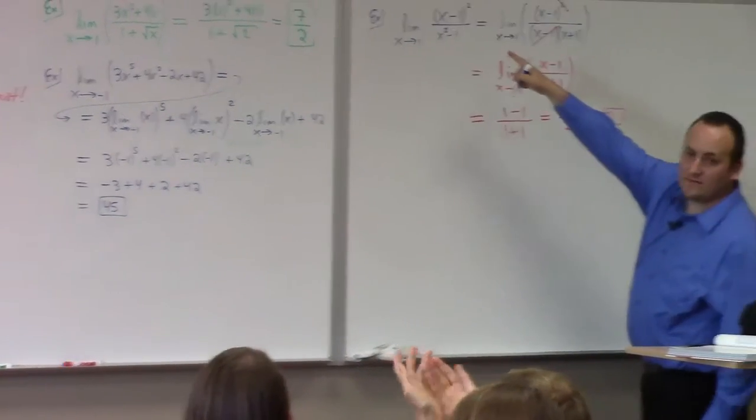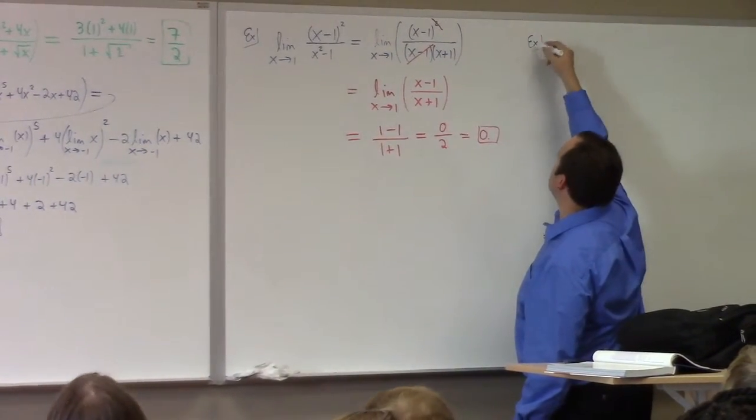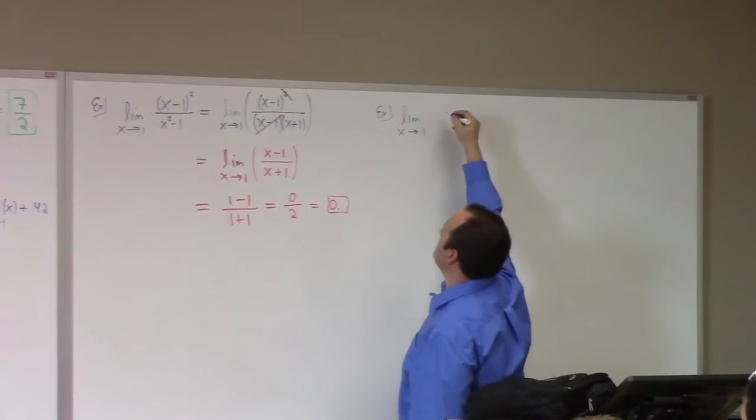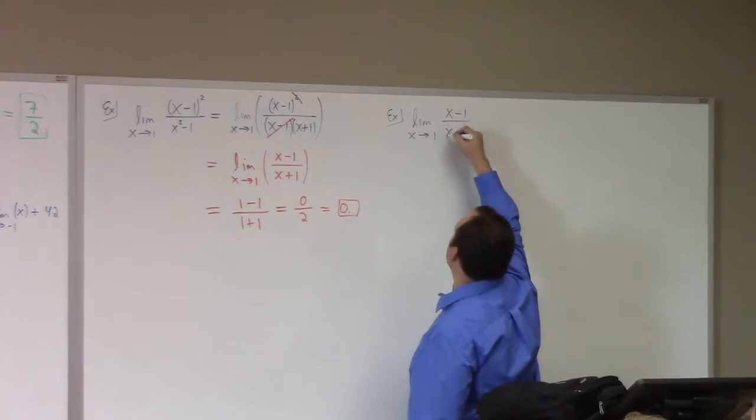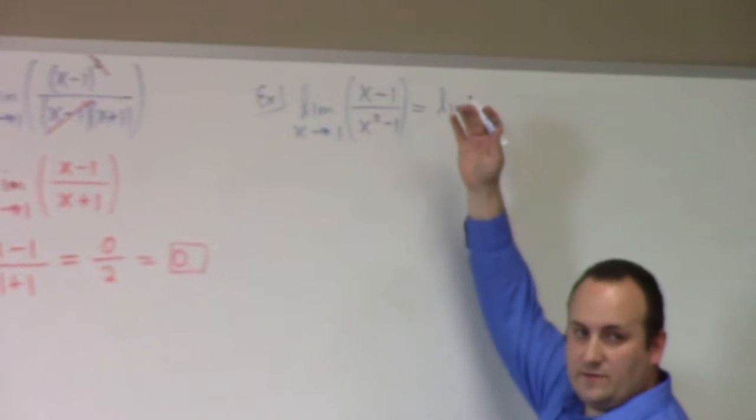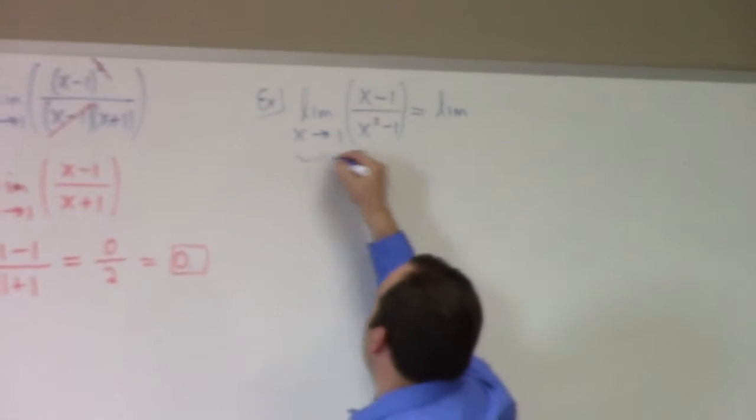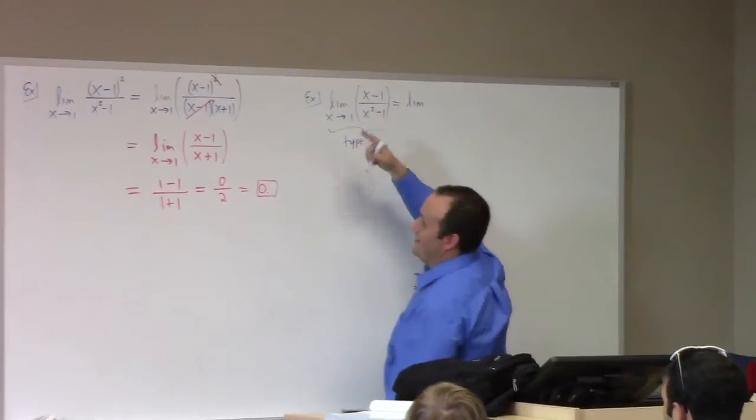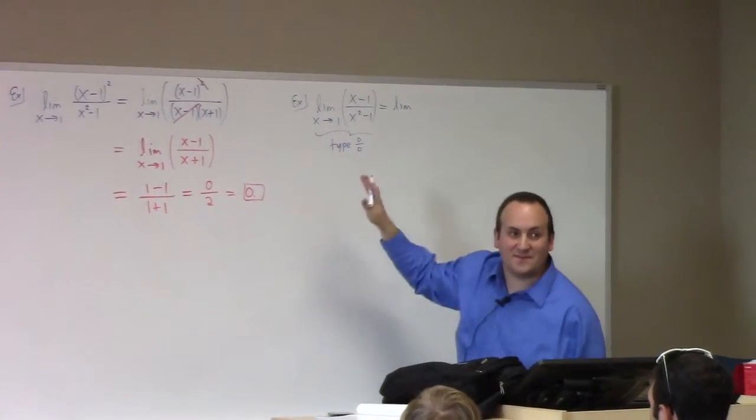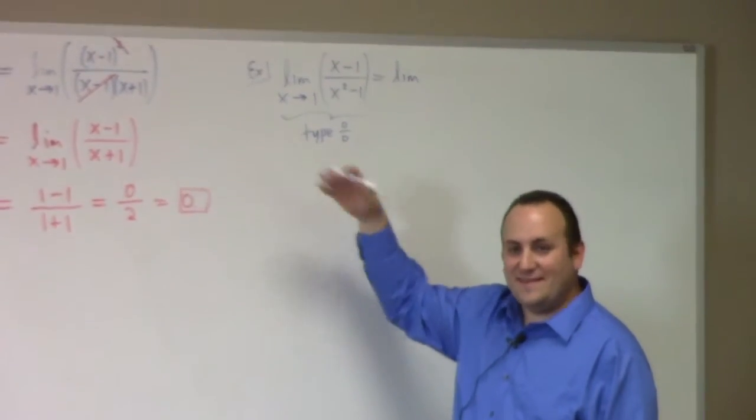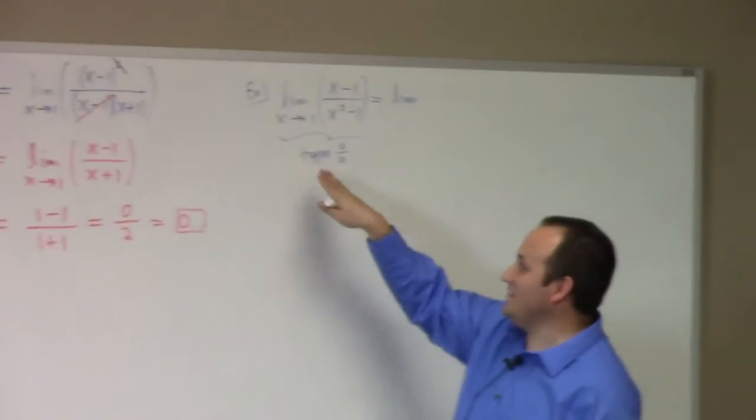So what would have happened if I hadn't squared this? Start with we try to plug in one. Uh oh zero over zero. This has type zero over zero. Notice I have nowhere written that this is equal to zero over zero. Would not write that. It is not true. Nothing is equal to zero over zero. This is type zero over zero.